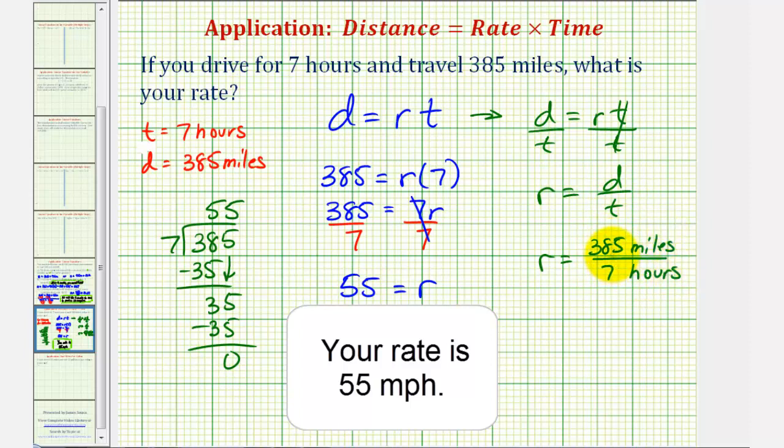Of course the quotient would be the same, 55. And notice how in this form it does emphasize that the units would be miles per hour. I hope you found this explanation helpful.